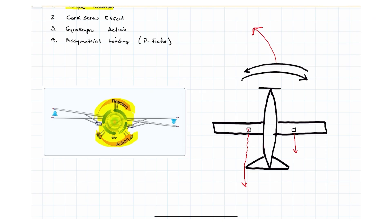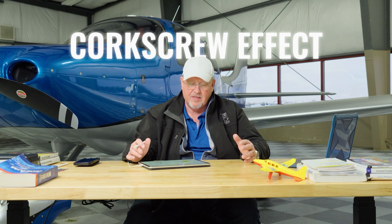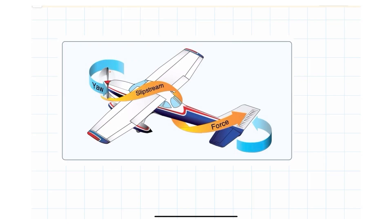The second thing that we do here is called the corkscrew effect. That's the second turning tendency. Spiraling slipstream, also known as corkscrew effect by the FAA's PHAC, Pilot's Handbook of Aeronautical Knowledge. What it is, is the airplane propeller is going to the right and the slipstream from the propeller is spiraling around the airplane.